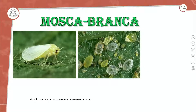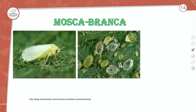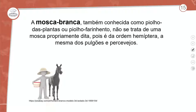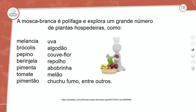Saindo agora da broca do café, vamos falar das características da mosca branca. A mosca branca, também conhecida como piolho das plantas ou piolho farinhento, não se trata de uma mosca propriamente dita, pois é da ordem hemíptera, a mesma dos pulgões e percevejos. A mosca branca é polífaga — ataca melancia, brócolis, pepino, berinjela, pimenta, tomate, pimentão, uva, algodão, couve-flor, repolho, abobrinha, melão, chuchu, fumo, entre outros.